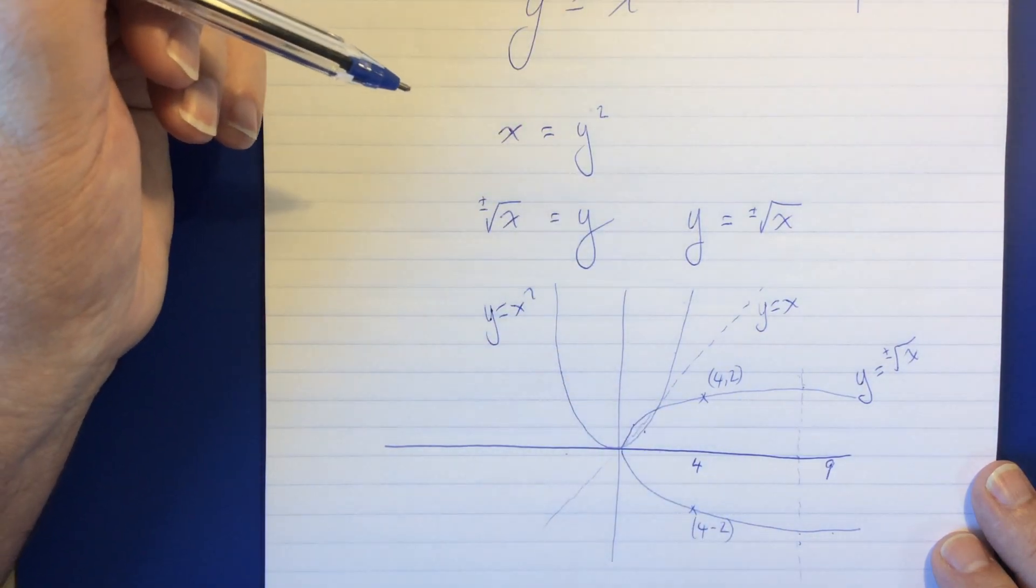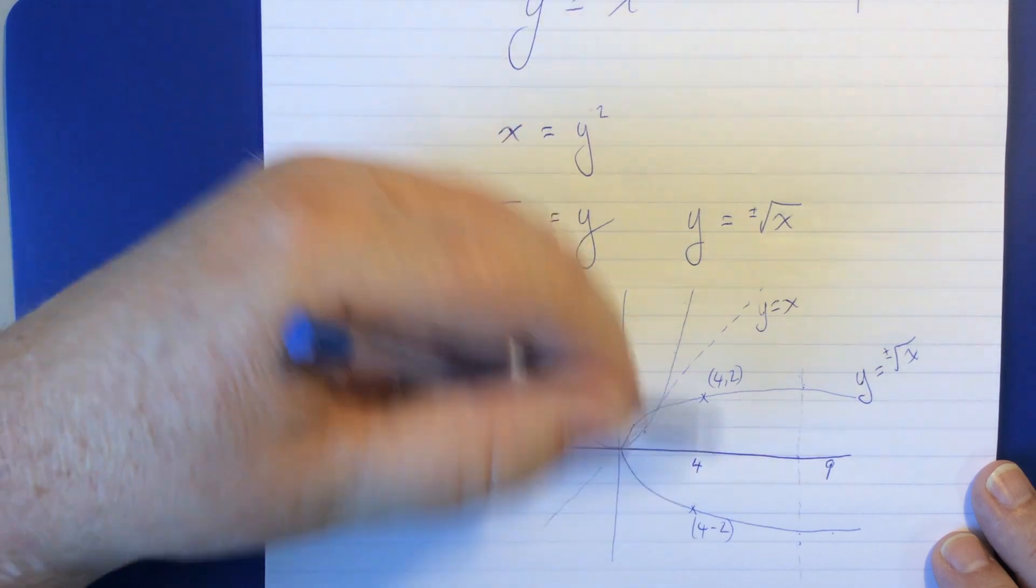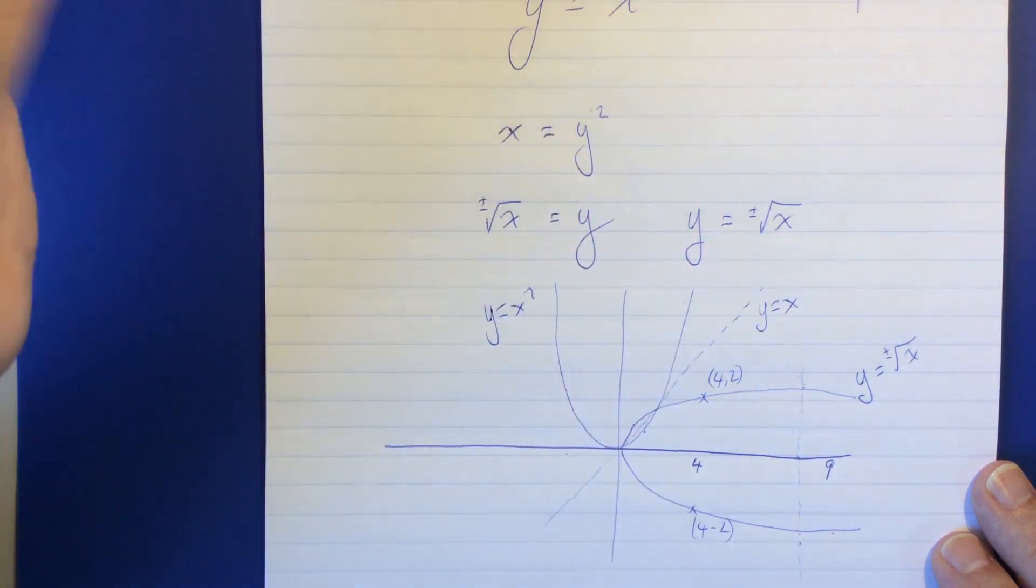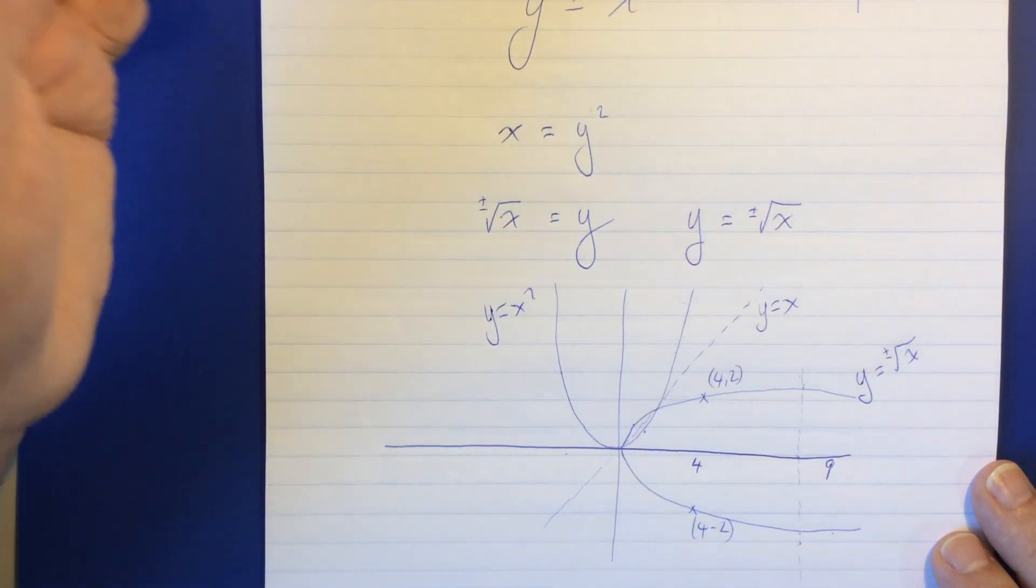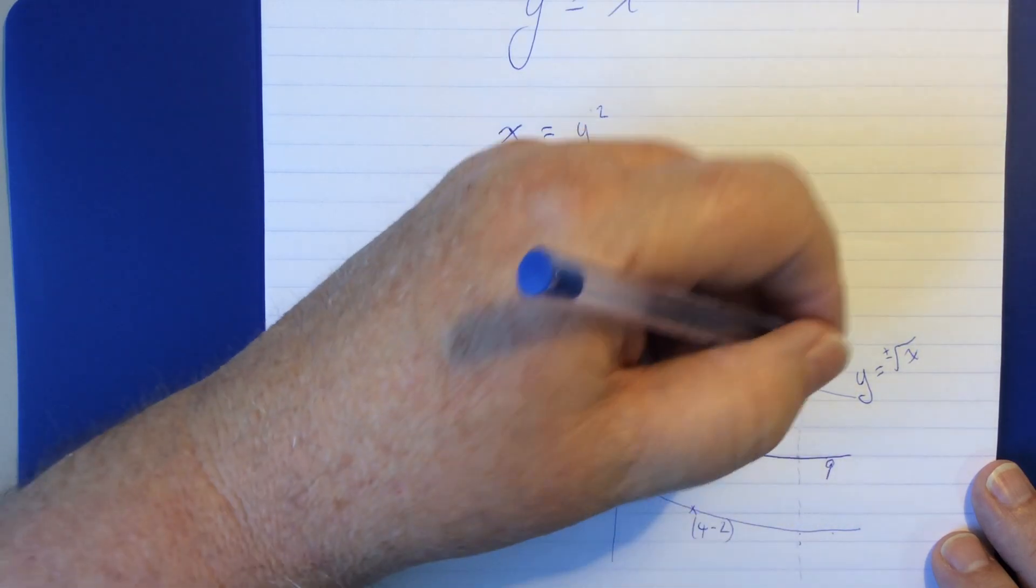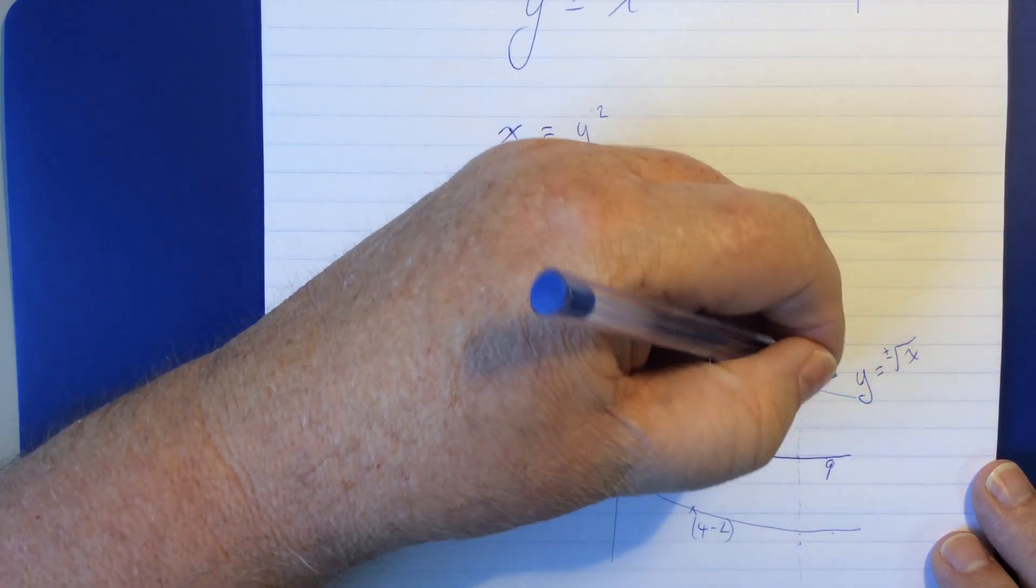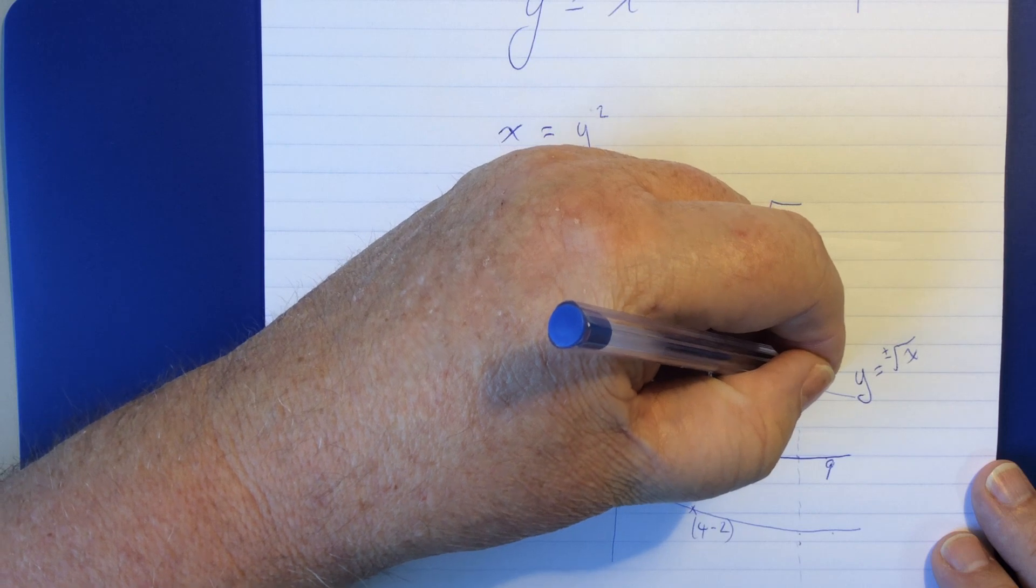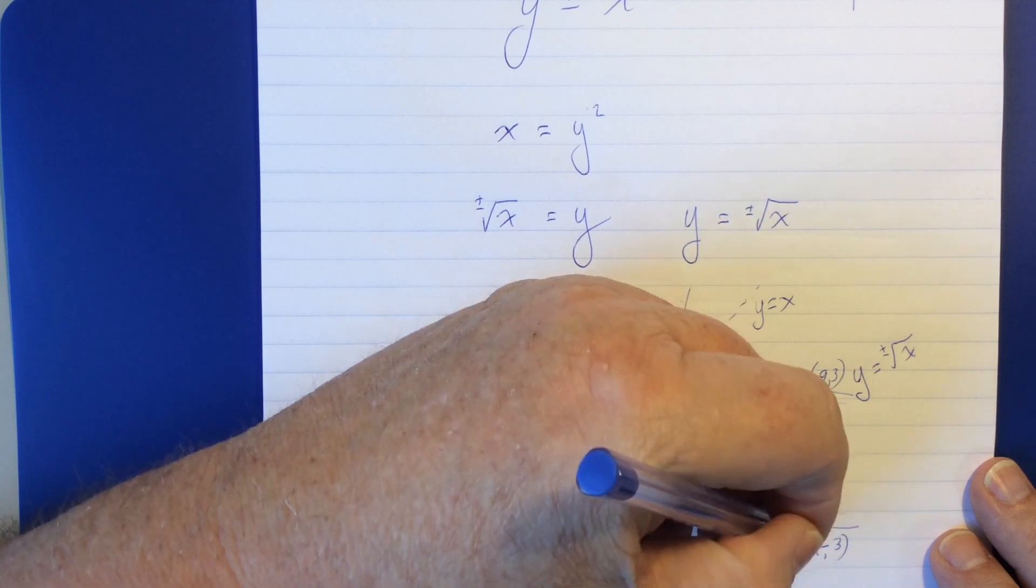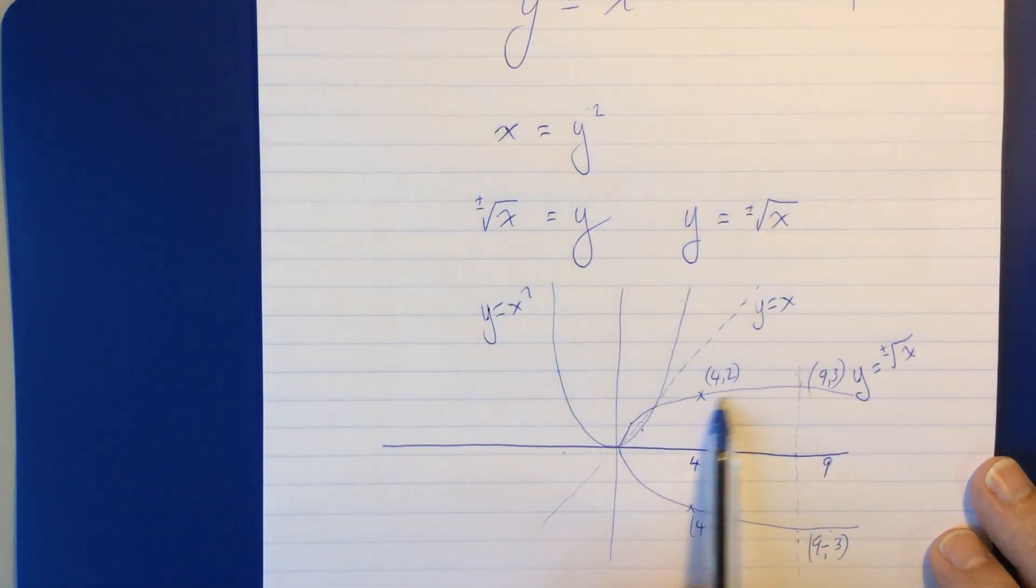So, they've done quite a bit more than just swap positions. Some other things have happened. But, generally, you map x onto y and y onto x. Let's get this other point, 9. So, that will be the square root of 9 is 3. So, this point here is 9, 3. And this point down here is 9, negative 3.